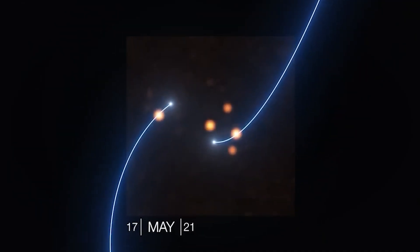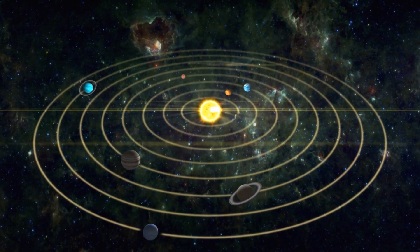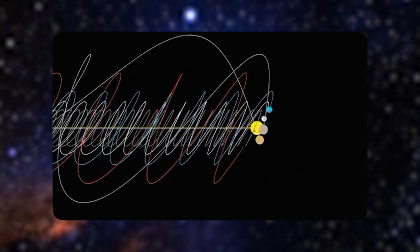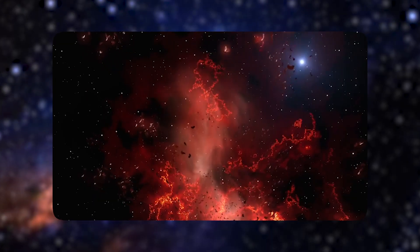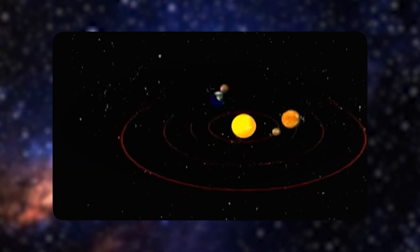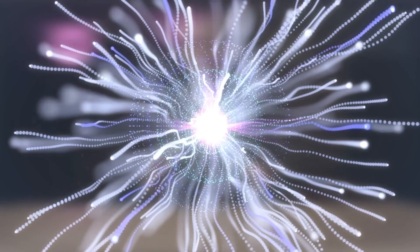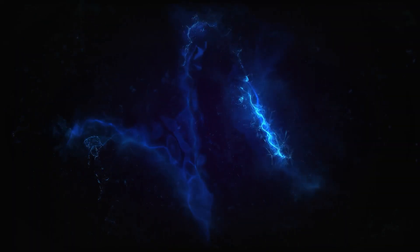Moving further out, we encounter something even more mysterious. Our solar system sits inside what scientists call the Local Bubble, a region of space about 1,000 light-years across that was carved out by multiple supernova explosions over the past 10 to 20 million years. These stellar explosions literally blew away most of the gas and dust in our neighborhood, creating a cavity of hot, thin plasma.